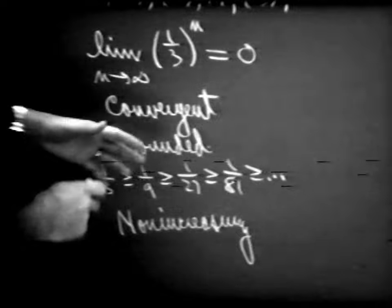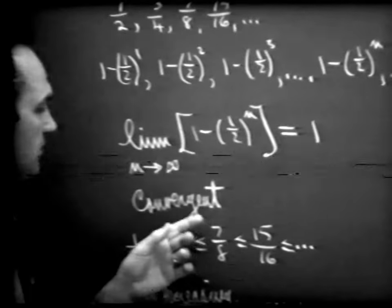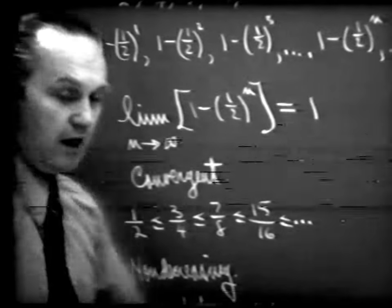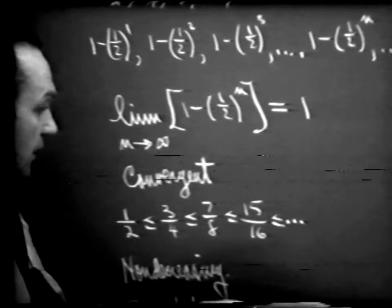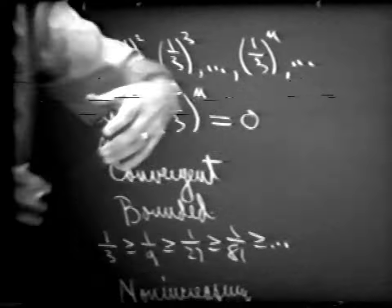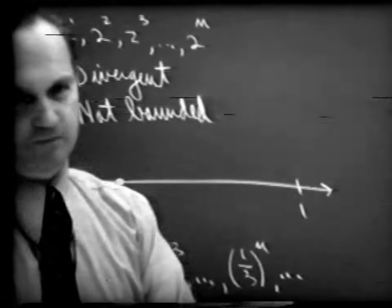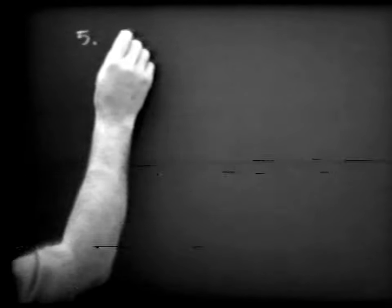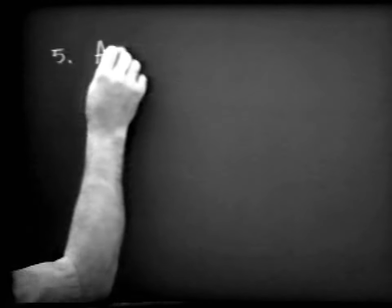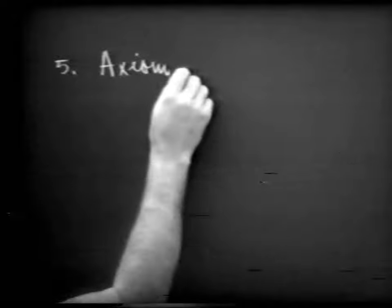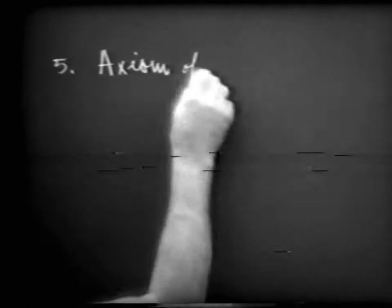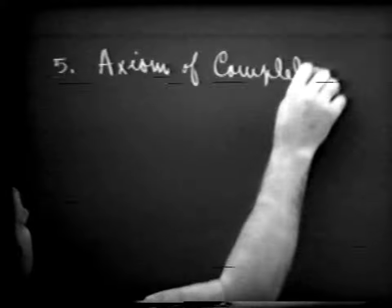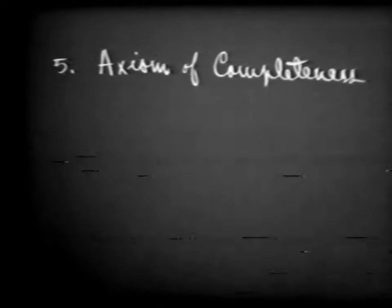Now, here are four examples. Of the four, we have two of them which are convergent and bounded. Therefore, what we'd like to do is make an assumption. There's a very good reason why we want to make this assumption, and we'll go into that in a few minutes. We call this an axiom — one of the last axioms that we need to have for our real numbers. It's called the axiom of completeness.